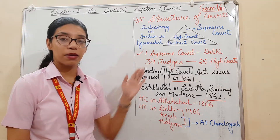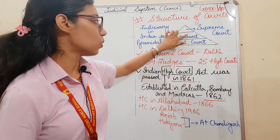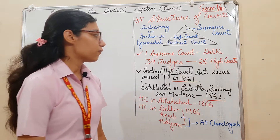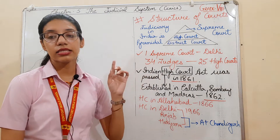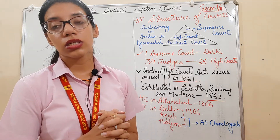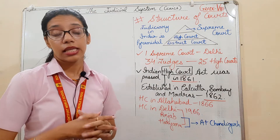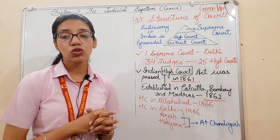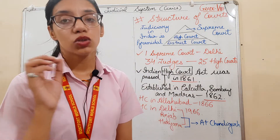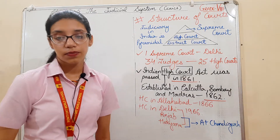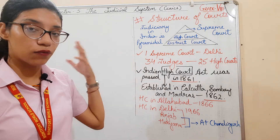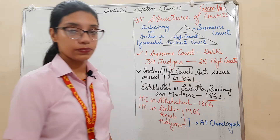The structure of the judiciary in India is pyramidal: at the top is the Supreme Court, then the High Court, then the district court or lower court at the bottom. In India, there is only one Supreme Court, which is in Delhi. The lower district courts function according to the direct superintendence of their higher courts. The Supreme Court has 34 judges and there are 24 High Courts in India.